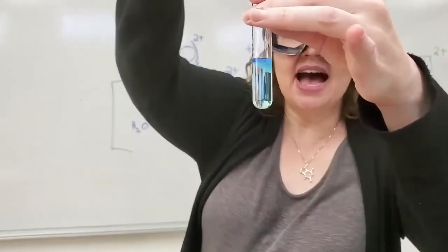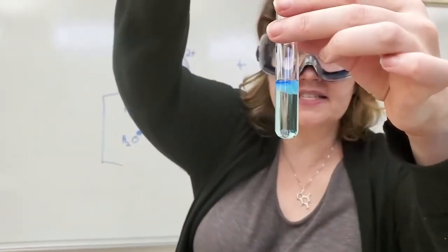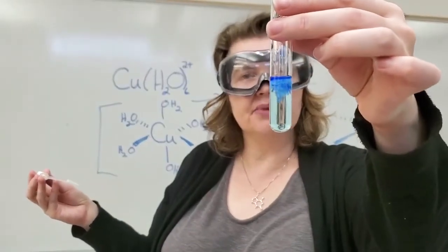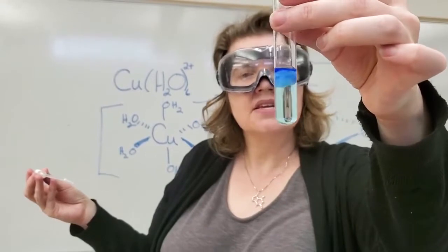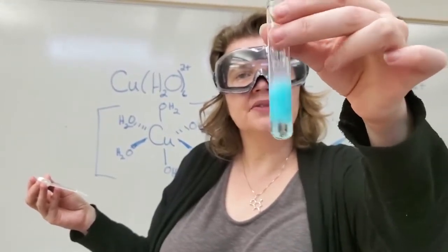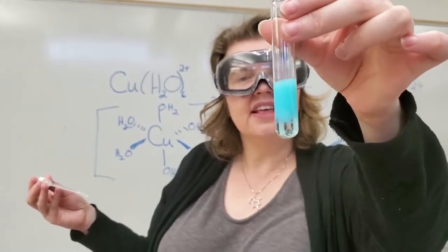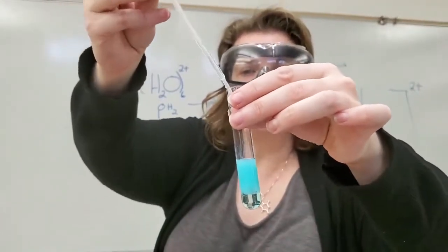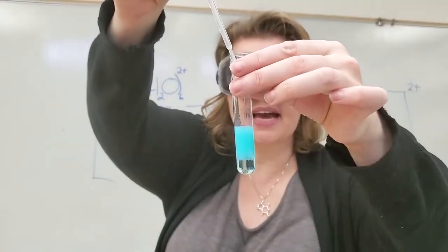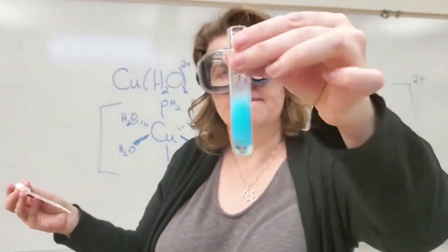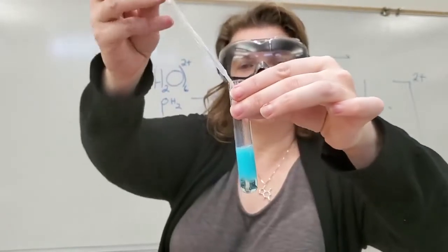As I add this ammonia to the solution, you can see two different colors of blue forming here. Copper hydroxide is an insoluble compound. This color here is the hydroxide. It's binding that copper ion, so we're making copper hydroxide. That is insoluble. So that's the first thing that happens, is as I add it drop by drop, I am binding all the copper into the form of copper hydroxide.